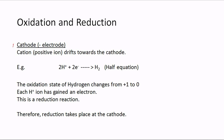At the cathode — the negative electrode — the cations or positive ions drift towards it. For H⁺ ions: 2H⁺ + 2e⁻ → H₂. The oxidation state of hydrogen goes from +1 to 0, which is a decrease in oxidation number — and that is reduction. Each hydrogen ion has gained an electron, so reduction takes place at the cathode during electrolysis.